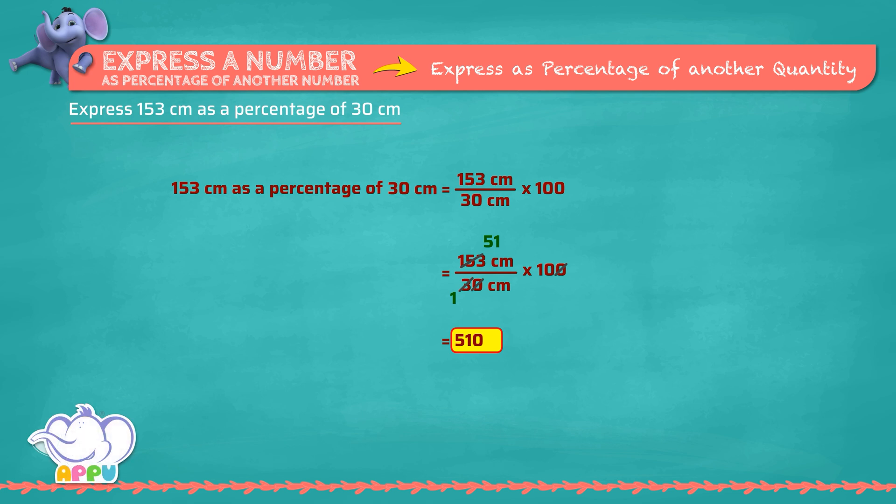Fifty-one times ten equals five hundred and ten. We place a percentage symbol, that is, five hundred and ten percent.